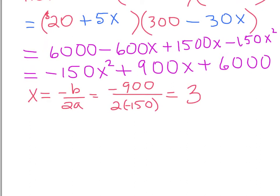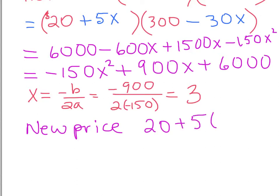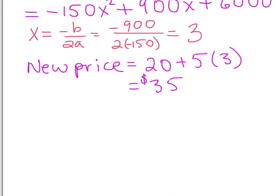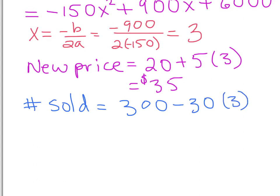We can increase the price three times by five dollars each. Our new price is 20 plus 5 times 3, which is thirty-five dollars. Now for the number of items sold: we started with 300 and for every increase of five dollars, 30 fewer people buy. Three increases means 90 fewer, so 210 people will buy the software.